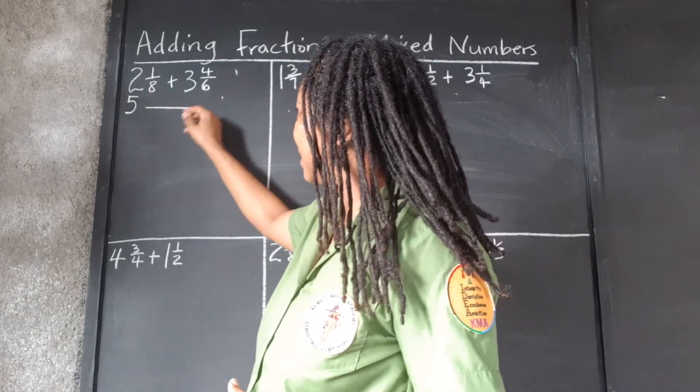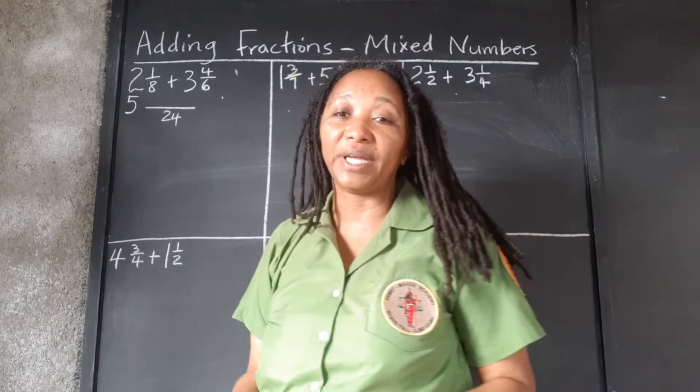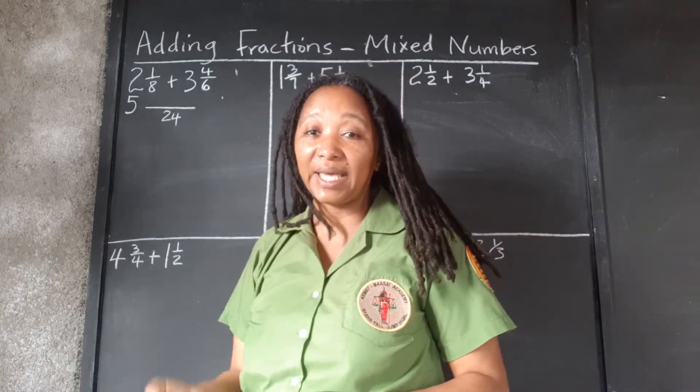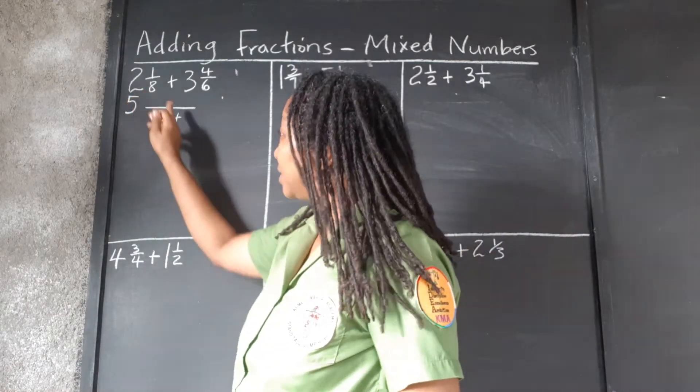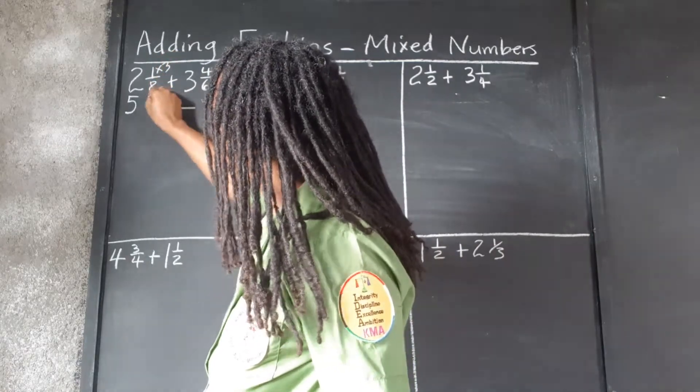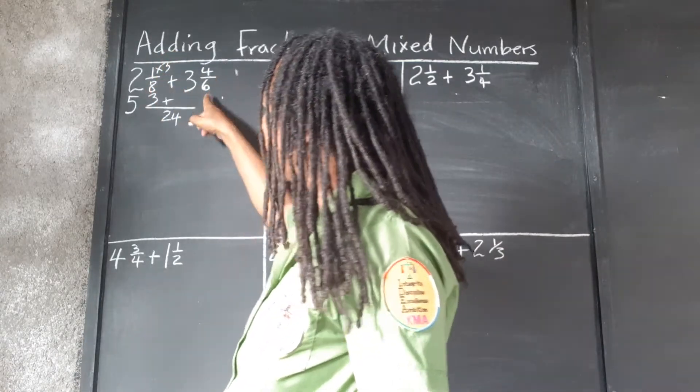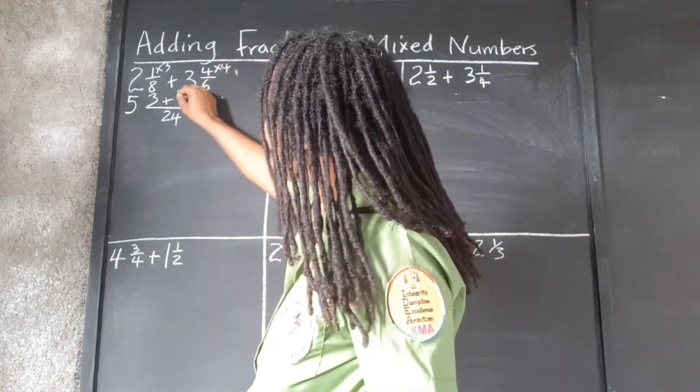Find the LCM of 8 and 6, which is 24. 24 is the smallest number that 8 and 6 can divide into without leaving a remainder. 8 goes into 24 3 times. 1 times 3 is 3. 6 goes into 24 4 times. 4 times 4 is 16.